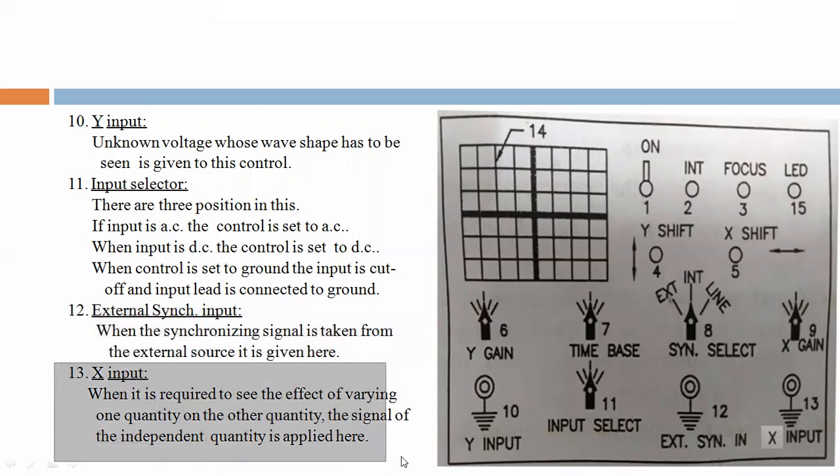Twelve, external sync input. When the synchronizing signal is taken from the external source, it is given here. Thirteen, X input. When it is required to see the effect of varying one quantity on the other quantity, the signal of the independent quantity is applied here.